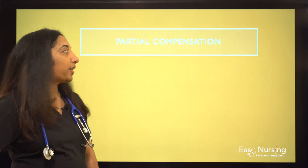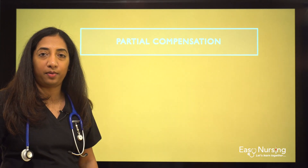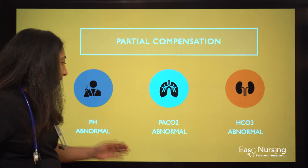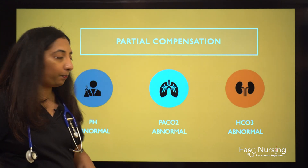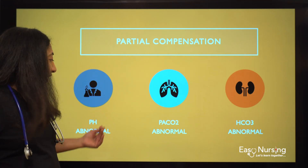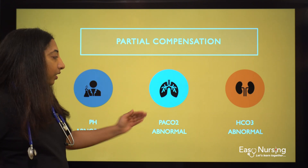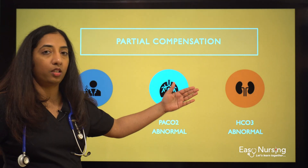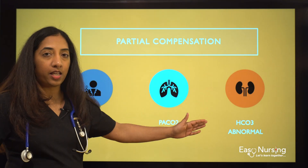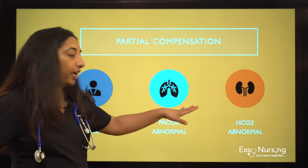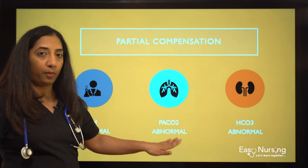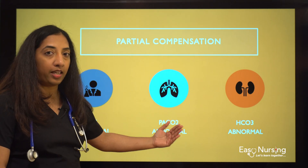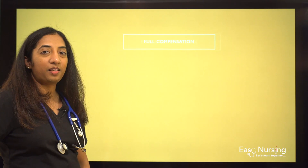For partial compensation, the pH, PaCO2, and bicarb are all abnormal. Our goal is to bring the pH back to normal. If PaCO2 was abnormal and HCO3 was normal, HCO3 increased or decreased itself trying to bring the pH back to normal — but even though it tried, it couldn't. That means it's trying but hasn't succeeded, so that is partial compensation.